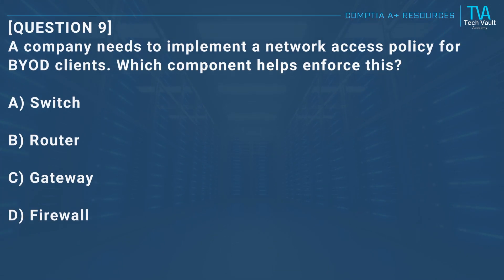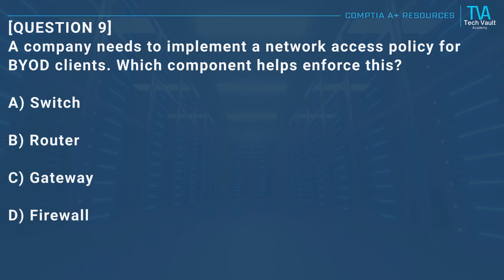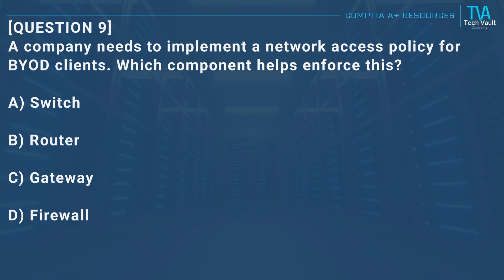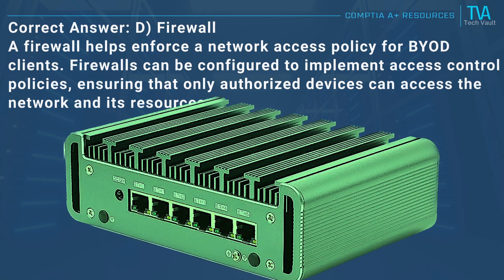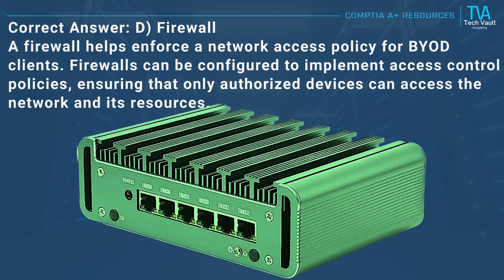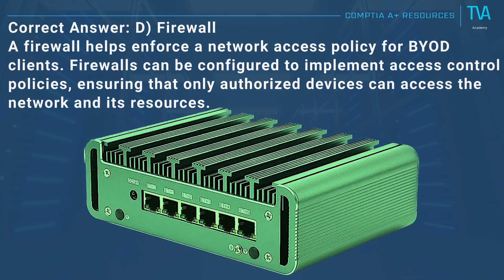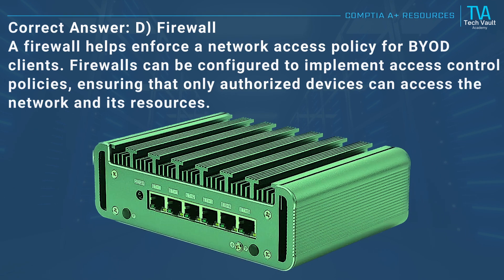Question 9: A company needs to implement a network access policy for BYOD clients. Which component helps enforce this? A, switch. B, router. C, gateway. D, firewall. Correct answer: D, firewall. A firewall helps enforce a network access policy for BYOD clients. Firewalls can be configured to implement access control policies, ensuring that only authorized devices can access the network and its resources.